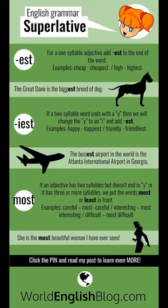Superlatives ending in '-iest': for two-syllable adjectives that end in Y, we change the Y to I and add '-est' to indicate the superlative. For example, 'happy' becomes 'the happiest,' and 'friendly' becomes 'the friendliest.' The busiest airport in the world is the Atlanta International Airport in Georgia.